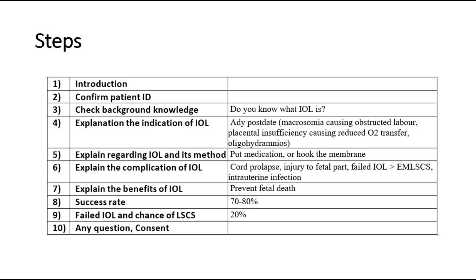Sixth, explain the complications that might occur. For example, in amniotomy, some complications that might occur are cord prolapse, injury to the fetal presenting part, or there might be failed induction of labour, which would require converting to emergency lower segment caesarean section. We have to inform the patient regarding this risk. Other complications include intrauterine infection.